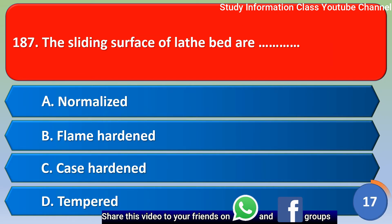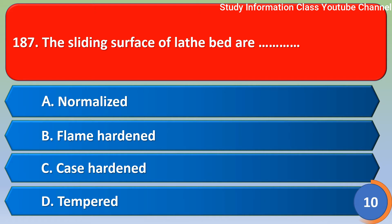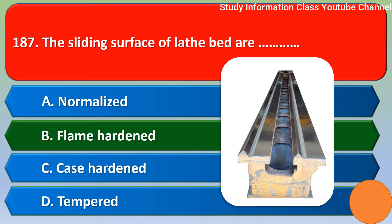Next question: the sliding surface of the lathe bed are — option A normalizing, option B flame hardening, option C case hardening, option D tempered. The correct answer is option B — flame hardening.